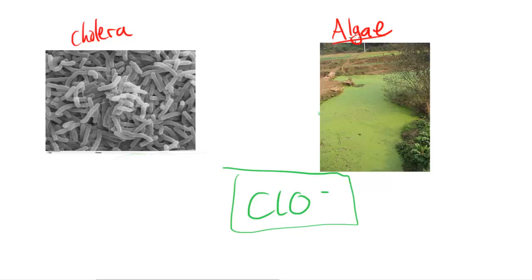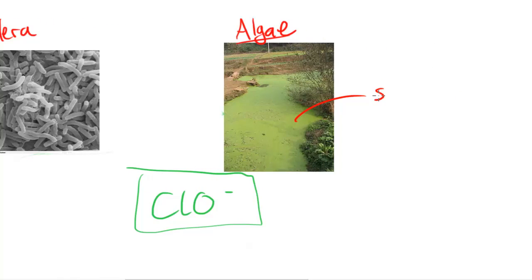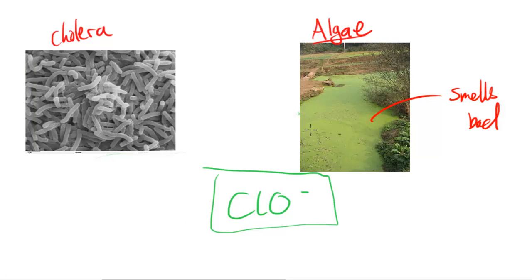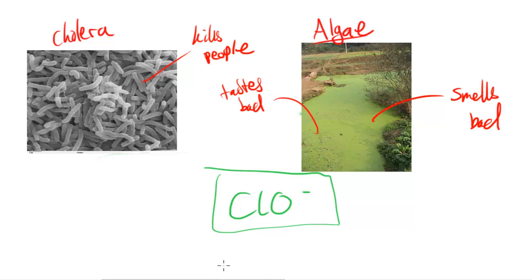What happens here is that algae actually smells kind of bad and tastes bad. Because it smells bad and tastes bad, it's not really something you want to have in your mains water supply. And cholera is something which kills people. It doesn't always kill people, but it often brings people very close to dying. And oftentimes, it can bring people to a point where they just die.